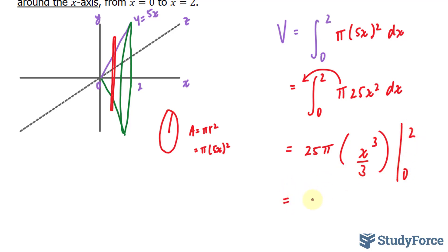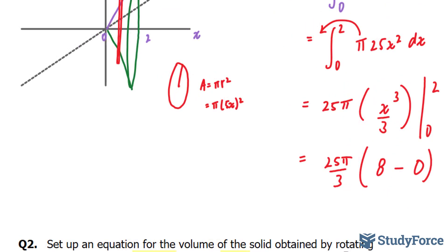Pulling out this 3, we end up with 25 pi over 3. And now we will evaluate this function at 2 and 0. So at 2, we end up with 8. And at 0, we end up with 0. So multiplying 25 pi times 8 over 3 will give you the volume of this function.